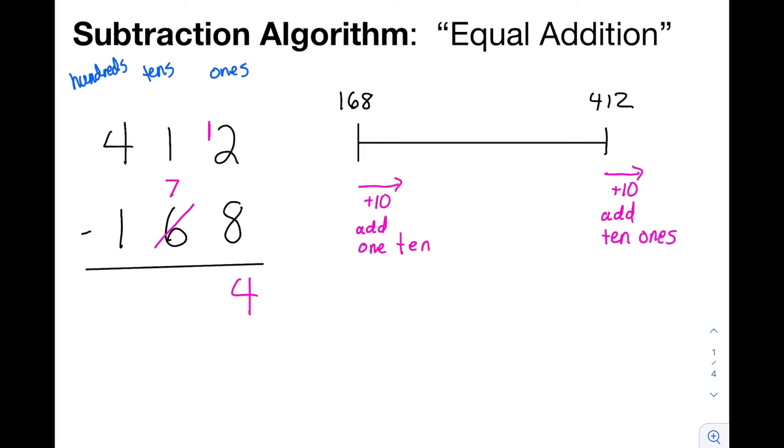Now let's look at the tens column. If I want to subtract 7 tens from 1 ten, I'm going to have a hard time. So what do I do? I turn my 1 ten into 11 tens. So to go from 1 ten to 11 tens, what did I do? I added 10 tens.